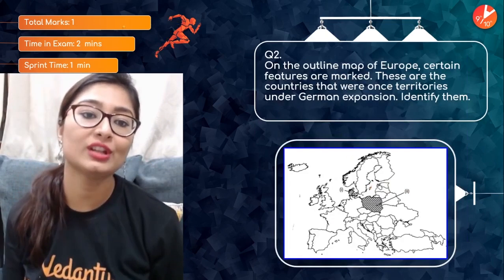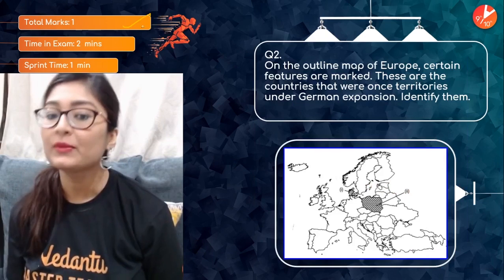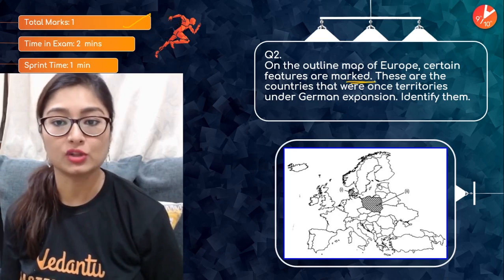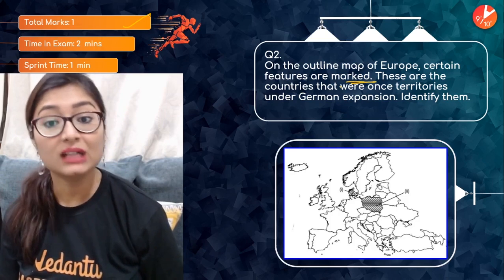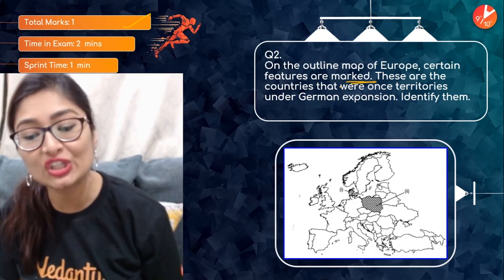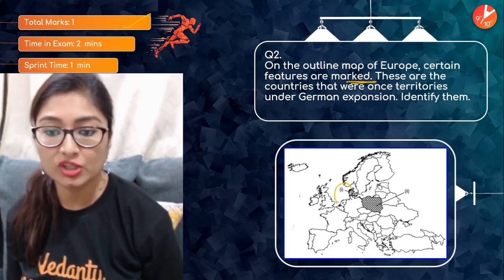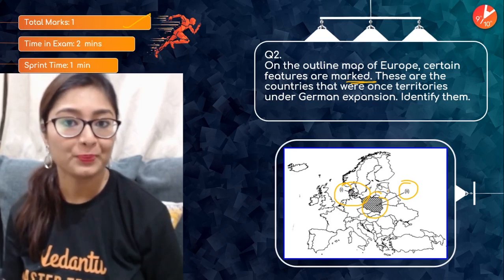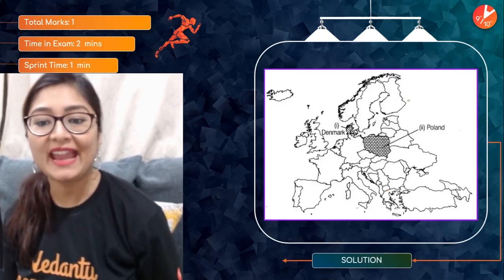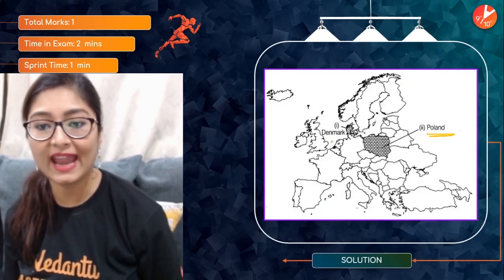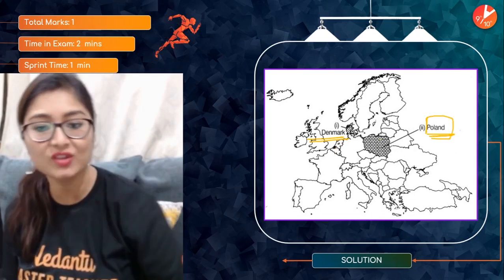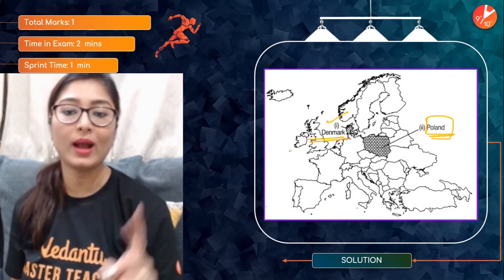Question 2 is another one-marker on an outline map of Europe. Certain features are marked — these are countries that were once territories under German expansion. Can you identify them quickly? Place 1 is Denmark, and Place 2 is Poland. Remember, Russia later took over Poland. So: place number one is Denmark, place number two is Poland.